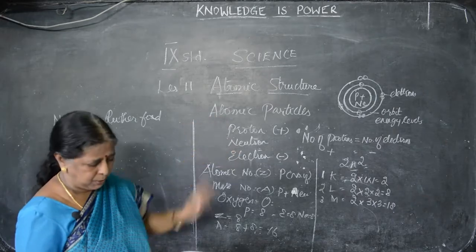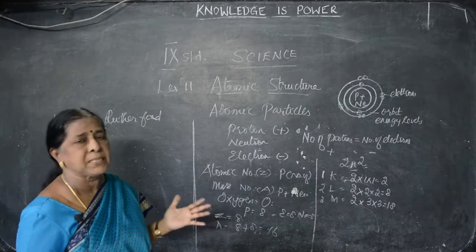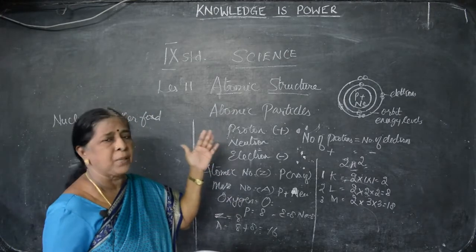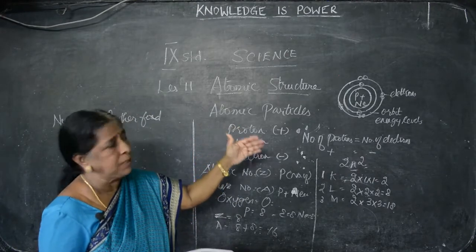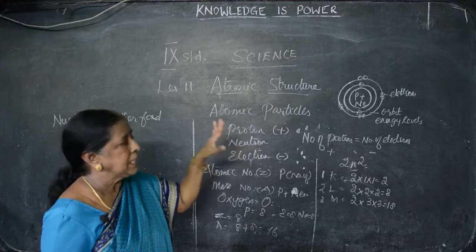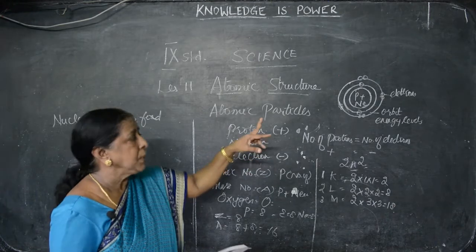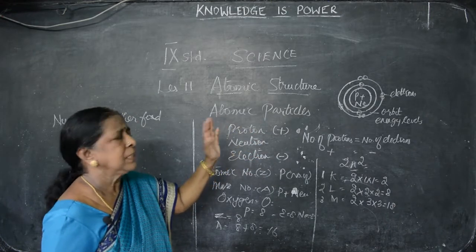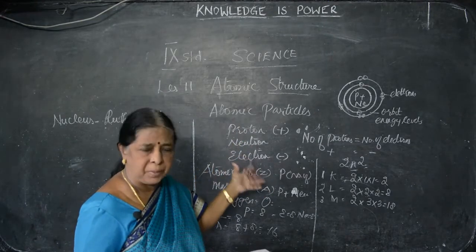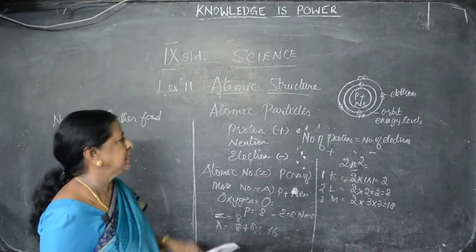Rutherford said the electrons revolve around the nucleus, and the number of protons equals the number of electrons, so the atom is neutral. Most scientists agree with Rutherford's points: the centre is empty space, that space is the nucleus, and it is positively charged. Actually, the nucleus has charge because of protons — protons are positively charged. Around the nucleus there are orbits, and in the orbits electrons revolve. This is Rutherford's atomic model.